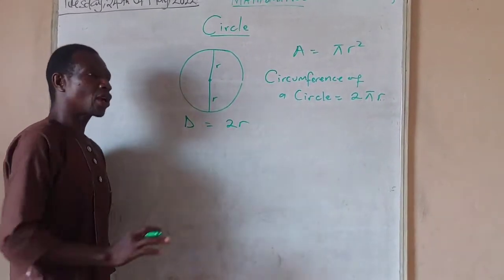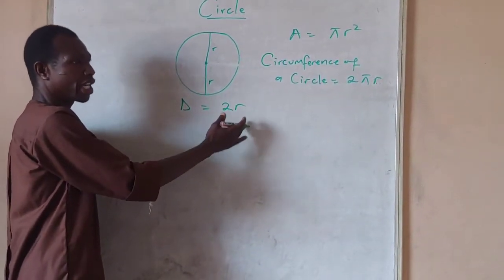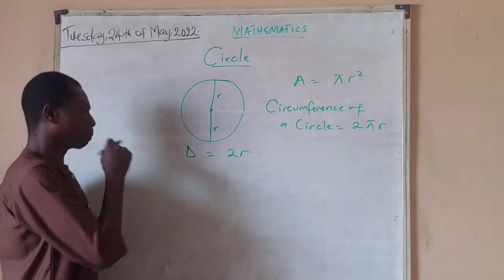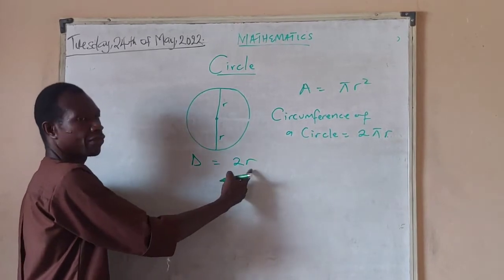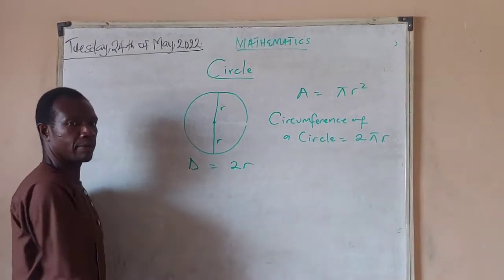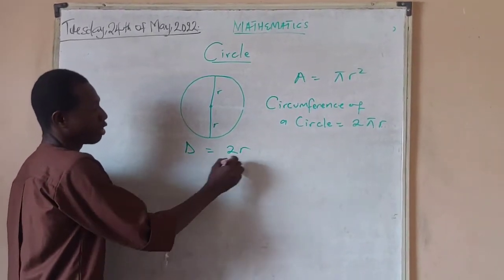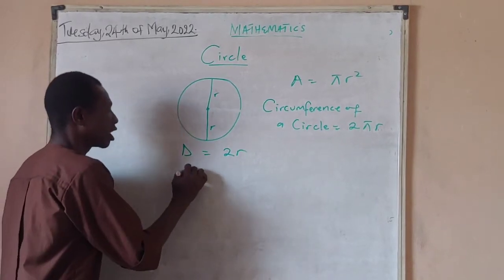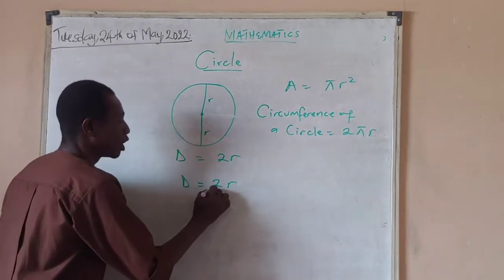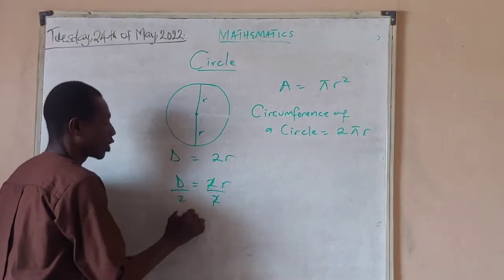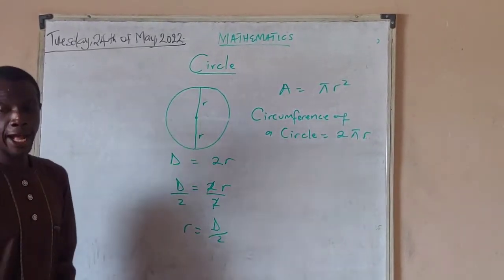In any question, you may be given diameter and not be given radius, or you may be given radius and not be given diameter. If you are given diameter and you want radius, you divide by 2. Since D equals 2r, it follows that r equals D divided by 2. That is to say, a radius is half of a diameter. Are we together?